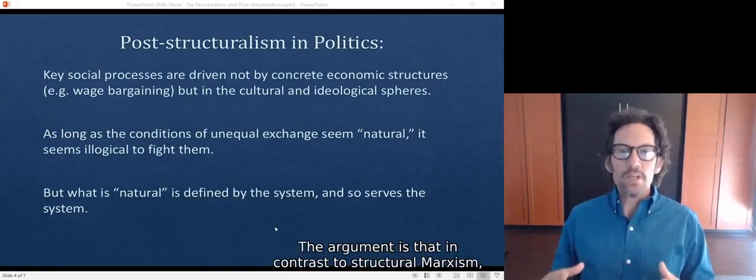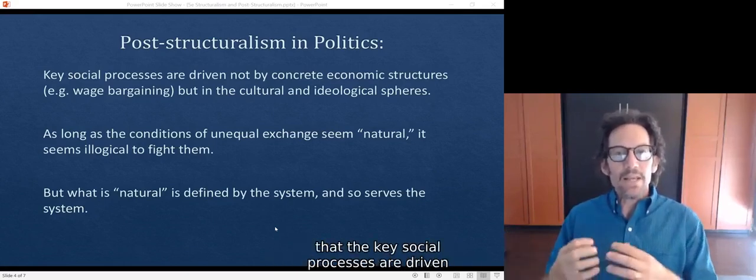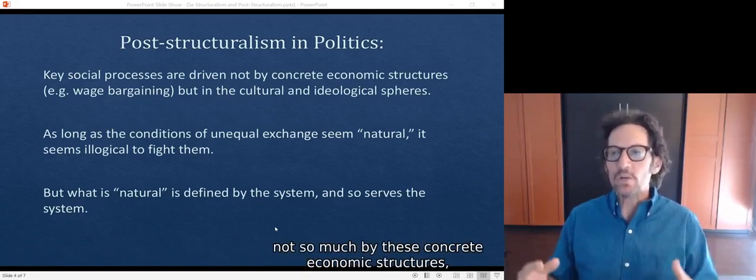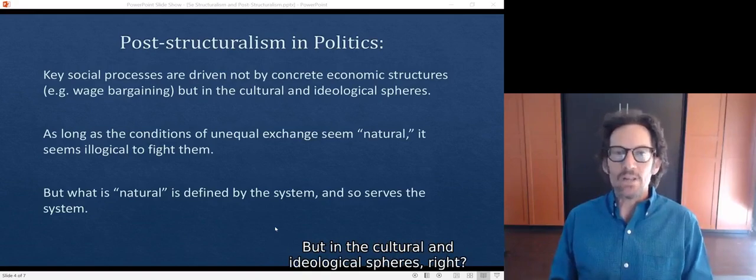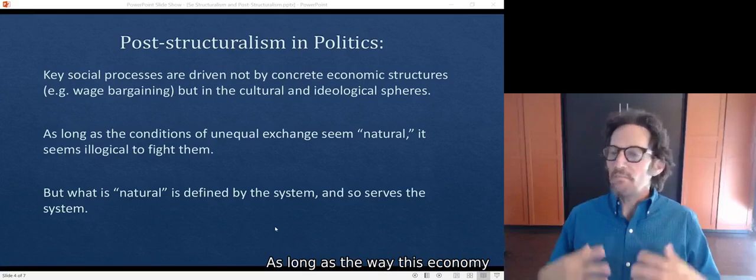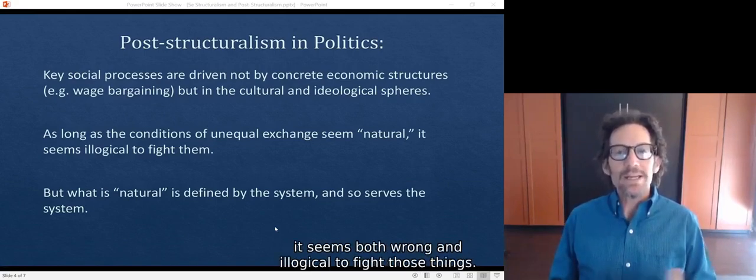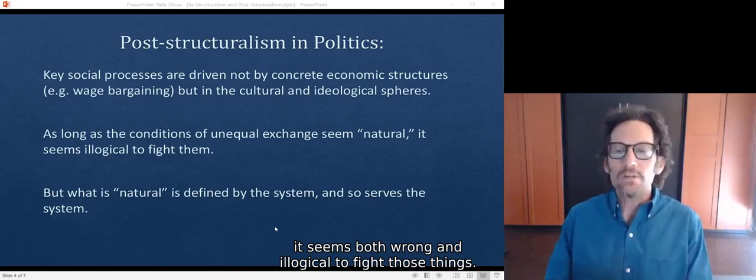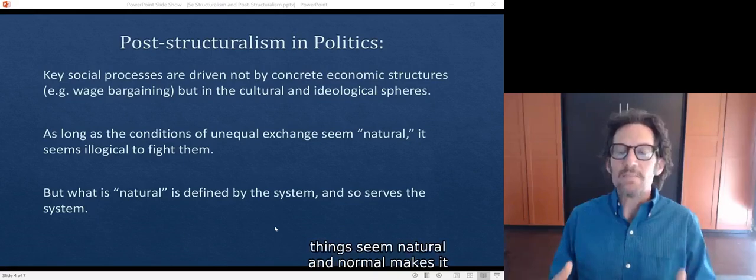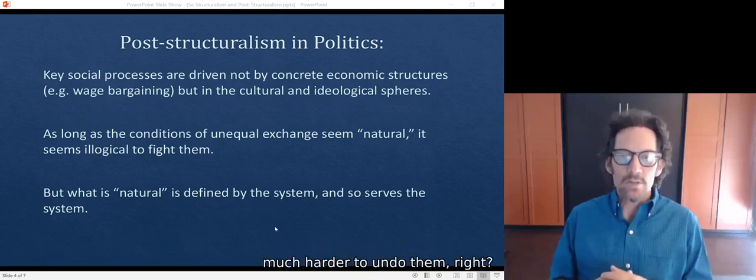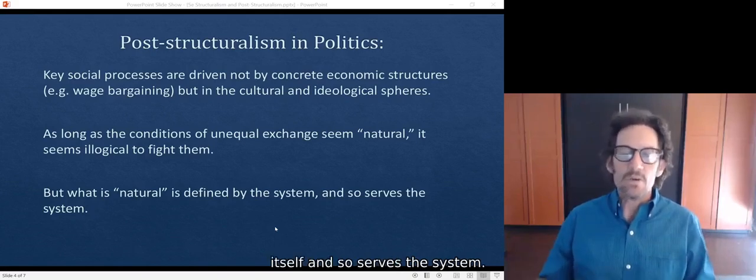So how does this work in politics? The argument is that in contrast to structural Marxism, which we've been talking about, that the key social processes are driven not so much by these concrete economic structures, such as wage bargaining and ownership of factories, but in the cultural and ideological spheres. As long as the way this economy and, say, this country works seems normal or natural, it seems both wrong and illogical to fight those things. And this is the point that post-structuralists make, is that the fact that things seem natural and normal makes it much harder to undo them. But the point that they make then is that what is natural is defined by the system itself, and so serves the system.